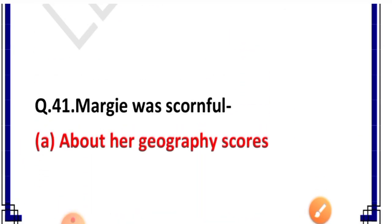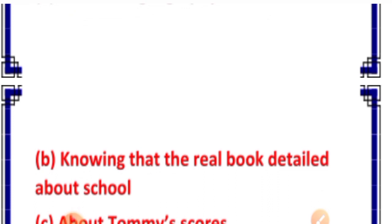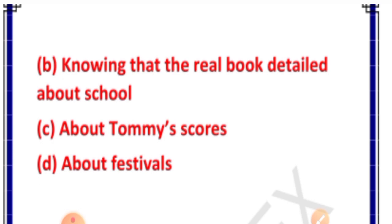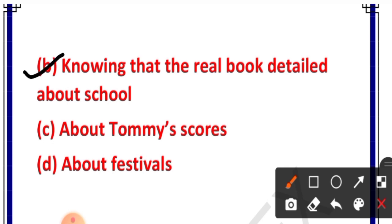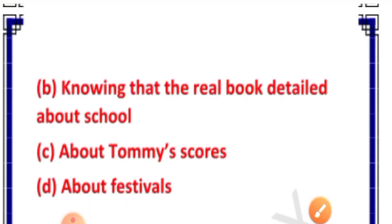Question number 41: Margie was scornful about — options: her geography scores, knowing that the real book details about school, about Tommy's scores, about festivals. Correct answer is option B — knowing that the real book details about school. Jab use school ke baare mein ek real book mili — ki kaise purane zamane mein school hote the, log kaise padhte the, fun karte the — yeh sab jaankar Margie scornful ho gayi thi.